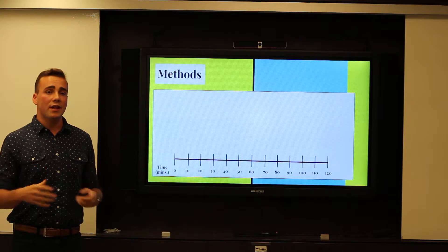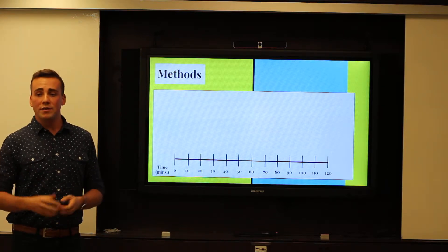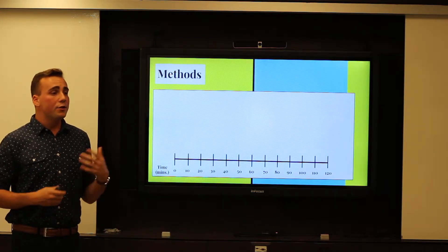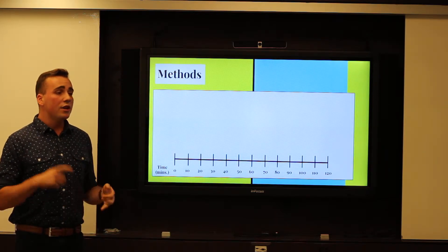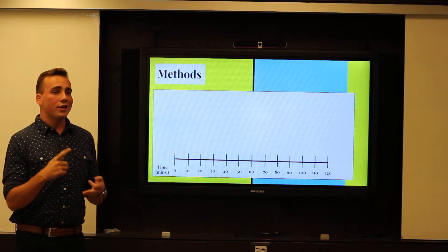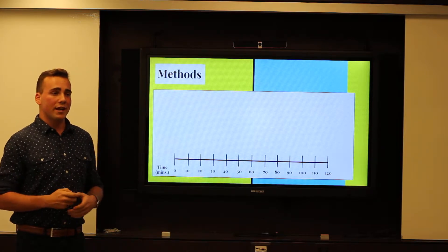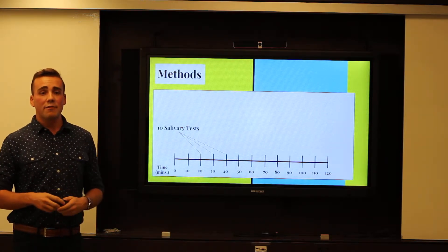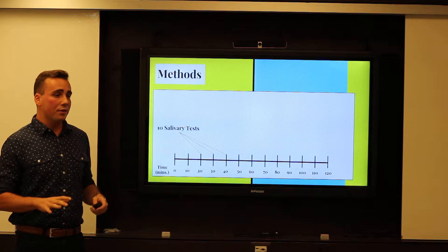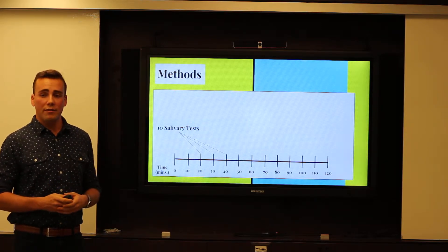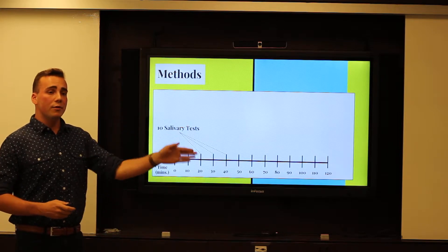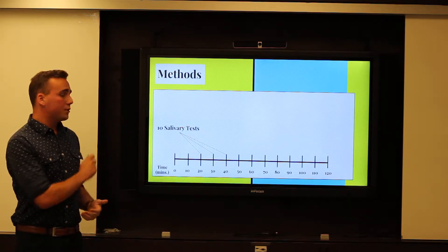So the methods: the participants were in this lab for two hours. The first 20 minutes of which were actually dedicated to demographic surveys where they would answer questions about age, sexual orientation, race, and self-esteem status. Then, after 20 minutes, the first of 10 different salivary samples were taken. These salivary samples helped the researchers in measuring cortisol levels, and they were taken at 10-minute intervals throughout the rest of the actual experiment.